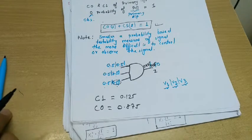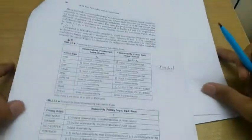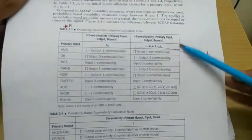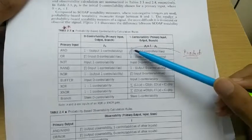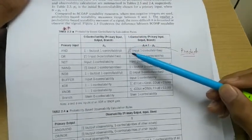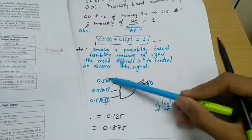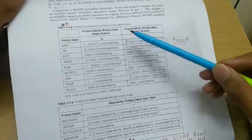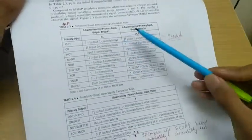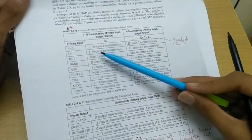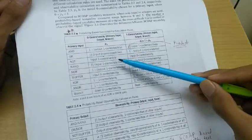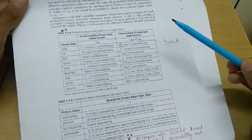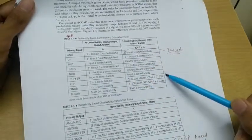This is from page 46 of the book 'VLSI Test Principles and Architecture.' The table shows formulas for all gate types. For an AND gate, C1 of output is the product of all input C1 values, and C0 is 1 minus that product. For an OR gate, output is 0 when all inputs are 0, so C0 is the product of all input C0 probabilities, and C1 is 1 minus that. You can proceed similarly for other gates.